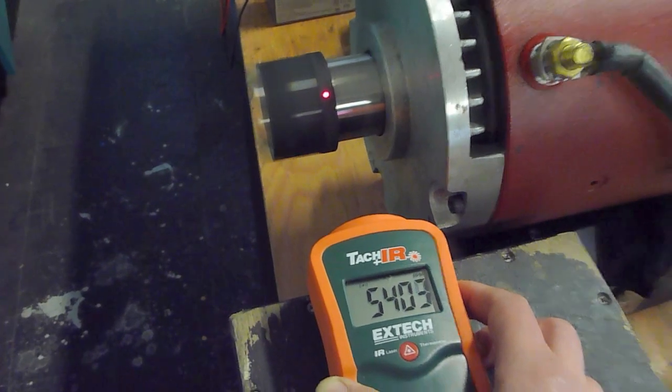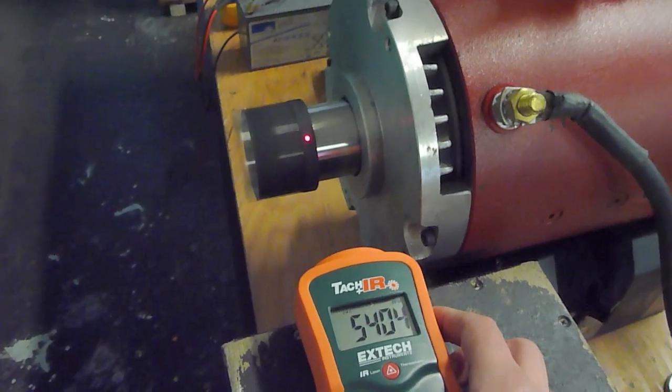Alright. So we are 100 rpms below what we set on the Soliton.